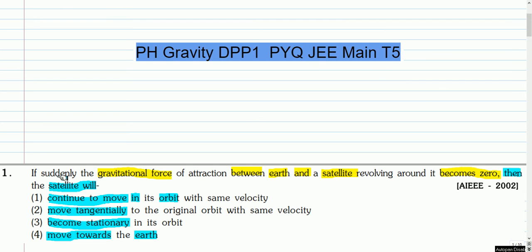This is the first question. If suddenly the gravitational force of attraction between Earth and a satellite revolving around it becomes zero, then the satellite will: option one, continue to move in its orbit with same velocity; option two, move tangentially to the original orbit with same velocity; option three, become stationary in its orbit; option four, move towards the Earth.